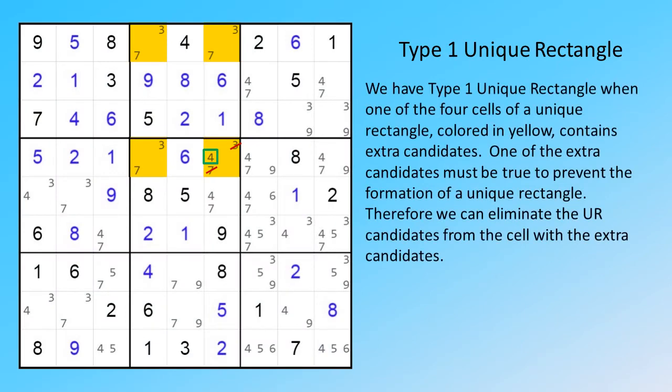We have type 1 unique rectangle when one of the four cells of a unique rectangle, colored in yellow, contains extra candidates. One of the extra candidates must be true to prevent the formation of a unique rectangle. Therefore we can eliminate the UR candidates from the cell with the extra candidates.